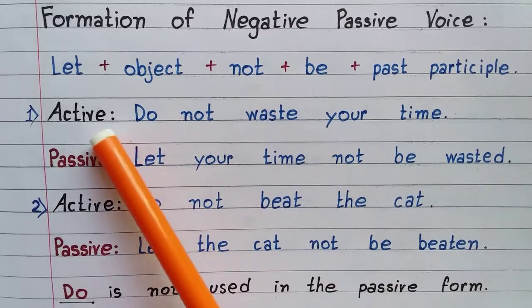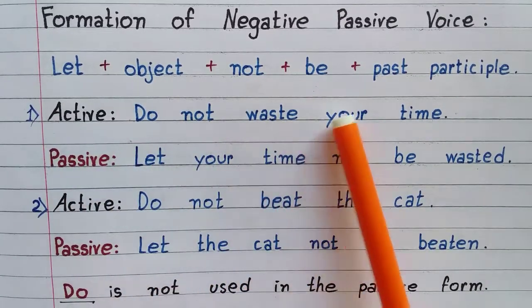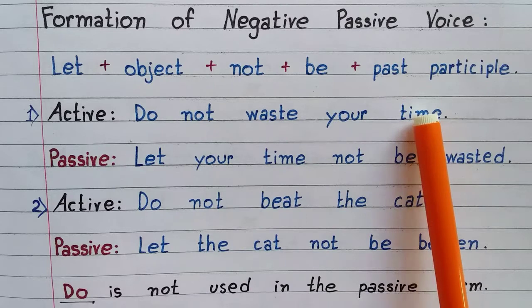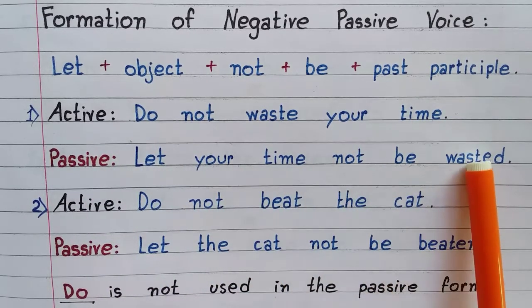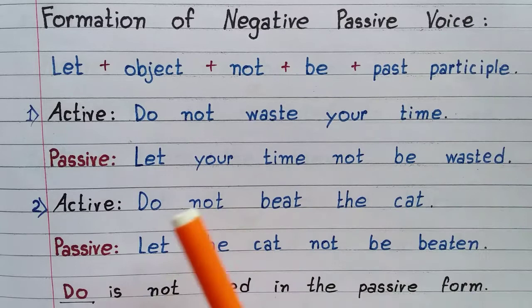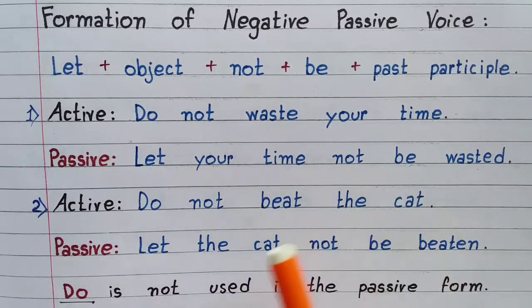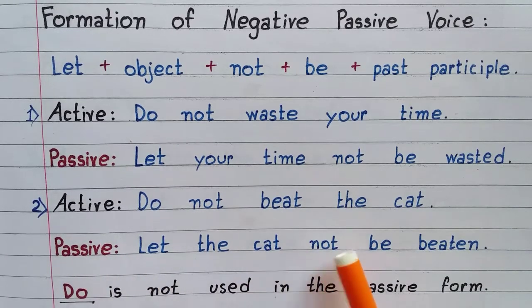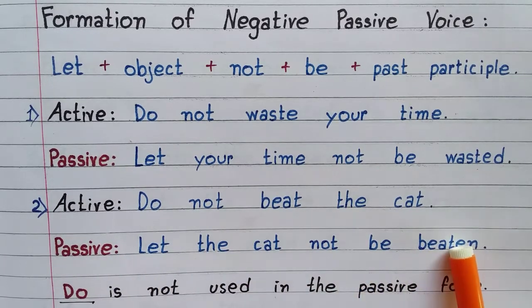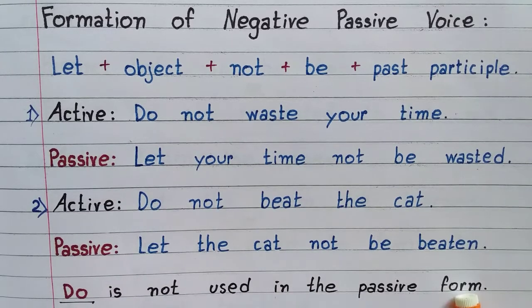Let us look at the first example. Active: do not waste your time. Passive: let your time not be wasted. Number two — Active: do not beat the cat. Passive: let the cat not be beaten. Note: 'do' is not used in the passive form.